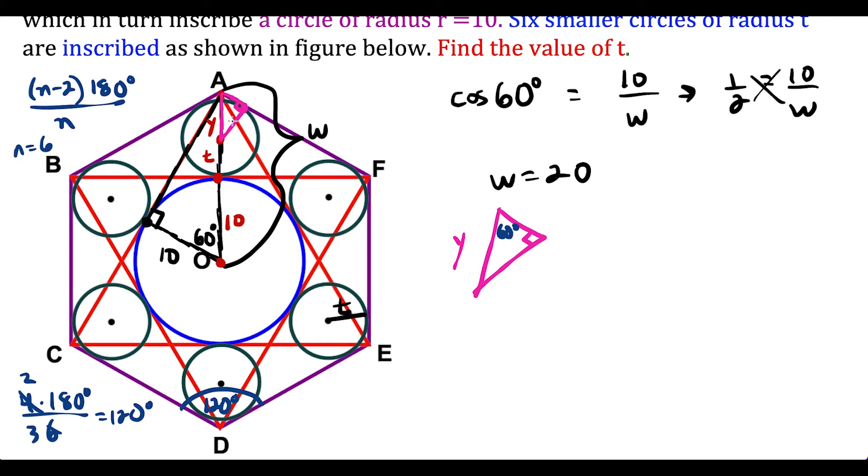So now what we have is we could also label that the distance from the center to this point is going to be t. So we have this right triangle, where we have t and y. So now we could set up another ratio. We could say that sine of 60 is equal to t over y.